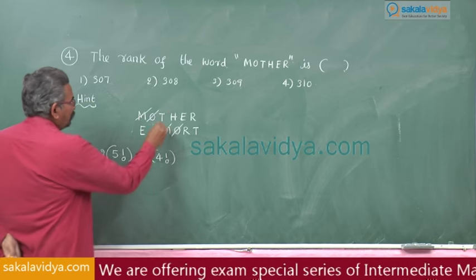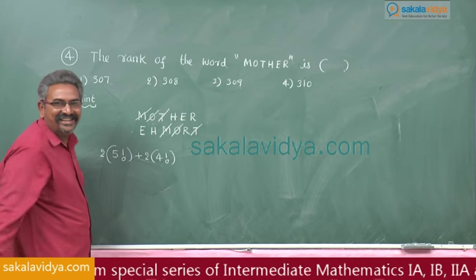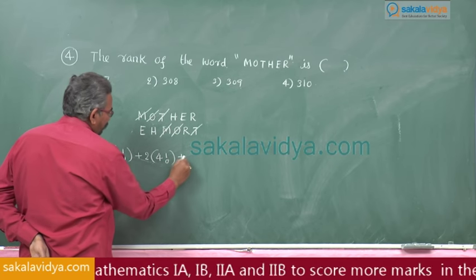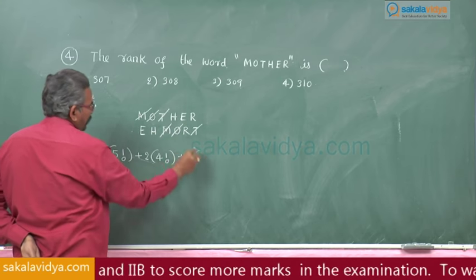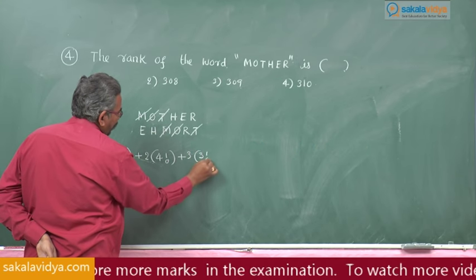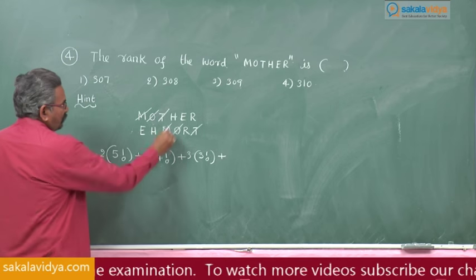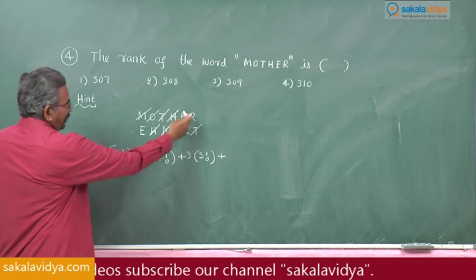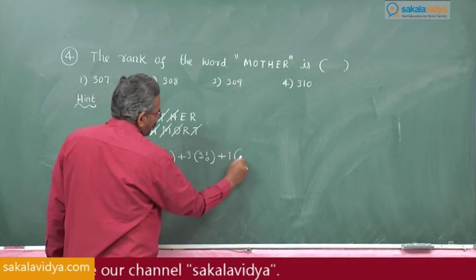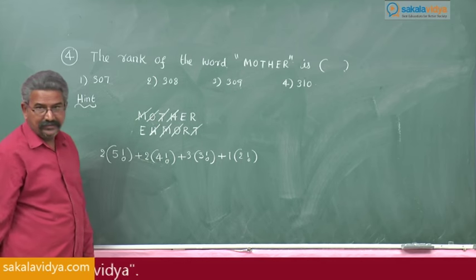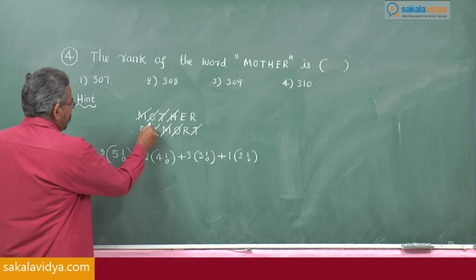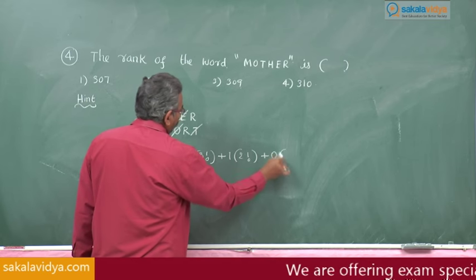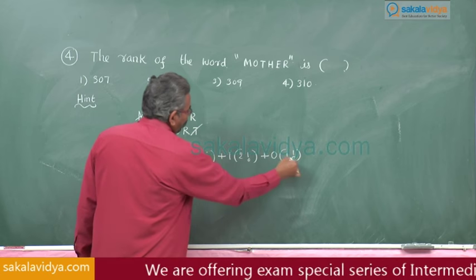Now we require T — T gets cancelled. How many letters are left before T? 3. So write 3, and after T how many are left? 3 — so 3 factorial. Next we require H — H gets cancelled. 1 is left before H, 2 are left after. So write 1 into 2 factorial. Are you following? Next is E — before E no letter is there, so write 0. But after E we have 1 letter, so write 1 factorial.